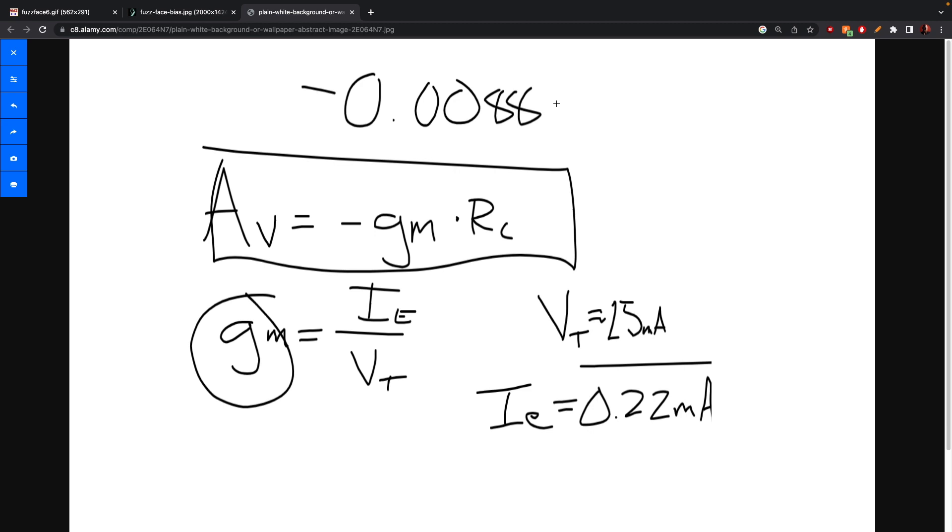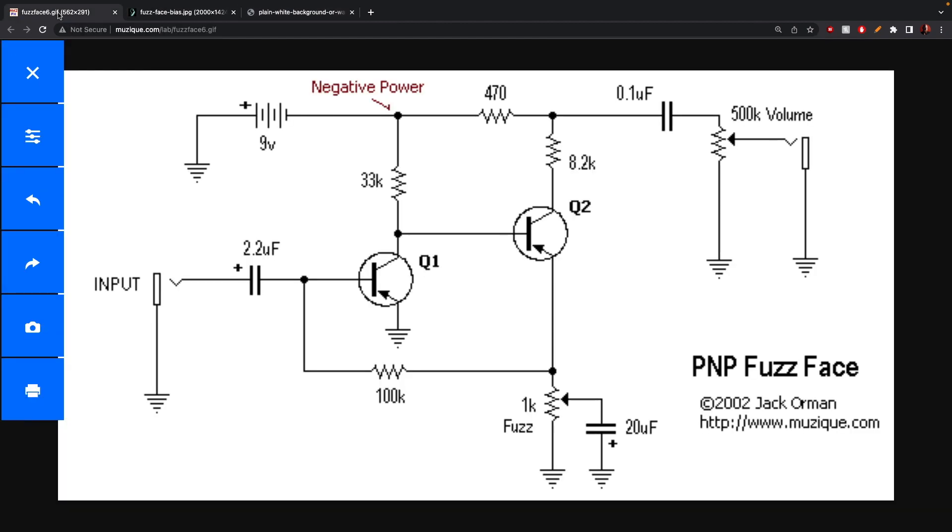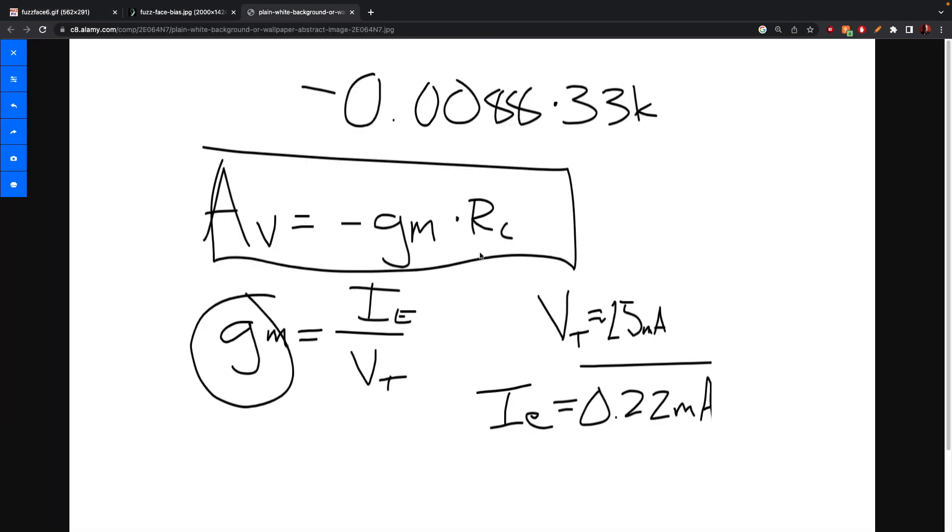So that times 33K, which is the resistance to the collector. If we go back to our thing, it's this guy right here. That will equal negative 290.4.